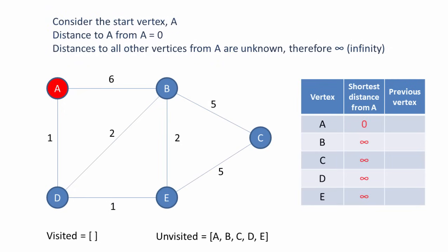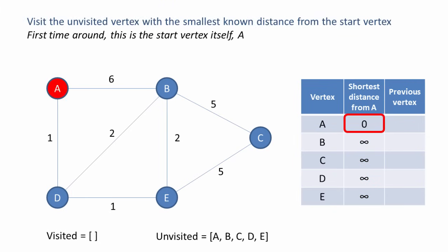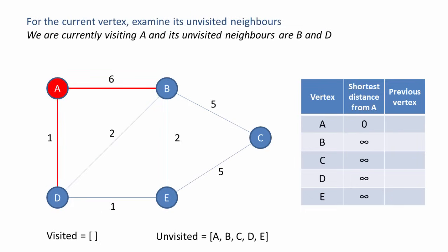We can include this information in our table straight away. Now the algorithm begins. We start by visiting the unvisited vertex with the smallest known distance from the start vertex. First time around, this is the start vertex itself — it's A. For the current vertex, we then examine its unvisited neighbours. We're currently visiting A, and its unvisited neighbours are B and D — the vertices that A shares edges with.